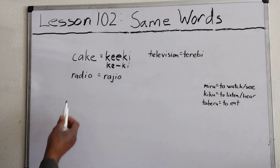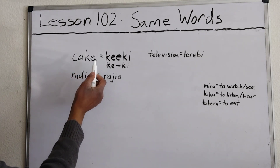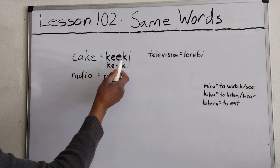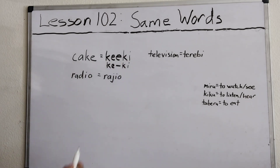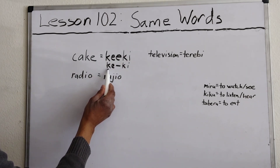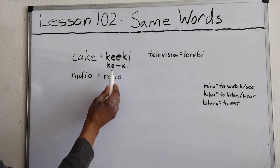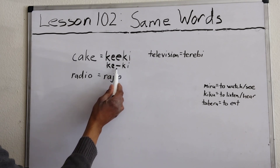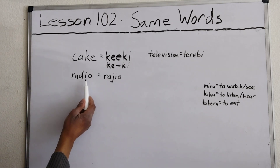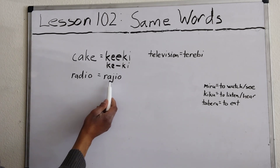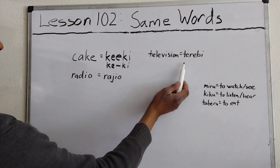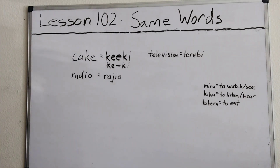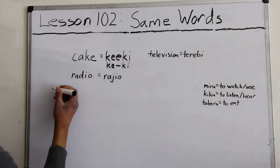For example, the English word 'cake' in Japanese is pronounced as 'keeki.' It's sometimes written with a K and a dash, which means to extend the sound — 'keeki.' And 'radio' is pronounced as 'rajio' in Japanese, and 'television' is pronounced as 'terebi' in Japanese. So they're basically the same.